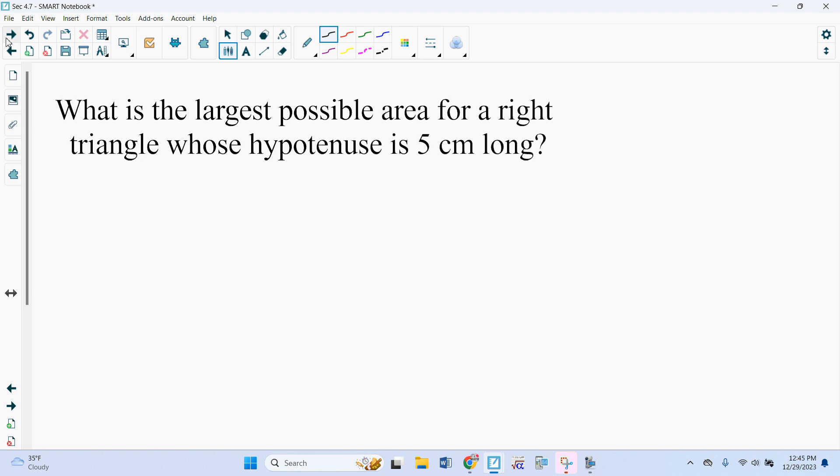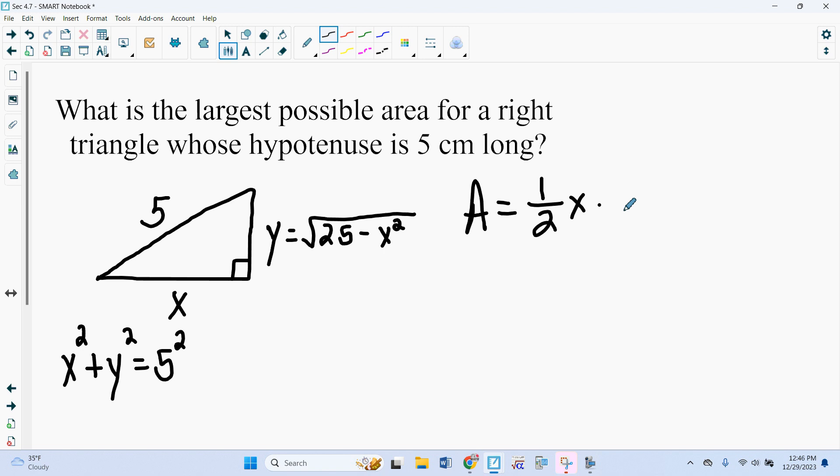So let's look at a harder one. What is the largest possible area for a right triangle whose hypotenuse is 5 centimeters long? So if we draw a picture, hypotenuse is 5. This side is x. This side here is, by Pythagorean theorem, we'll say this is y for now. This is x squared plus y squared equals 5 squared. So if I subtract the x squared and take the square root, my y is square root of 25 minus x squared. So now if we want to find the area of this, it is 1 half base times the height. So there is our formula for the area.